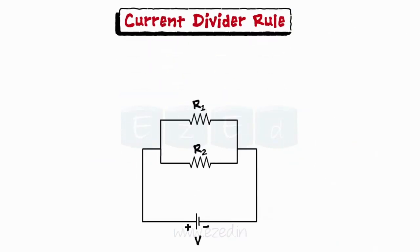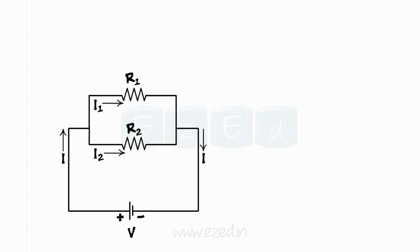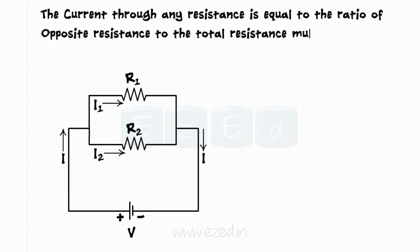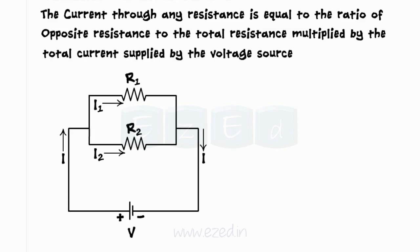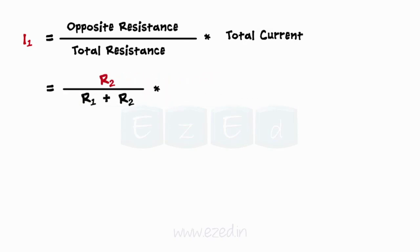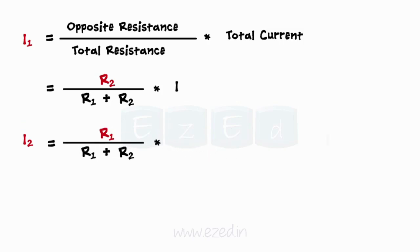Similar to the voltage divider for series circuits, we use the current divider rule to find the current through a particular branch of a parallel network. It states that the current through any resistance equals the ratio of the opposite resistance to the total resistance, multiplied by the total current. Thus, IR1 = R2/(R1+R2) × I, and IR2 = R1/(R1+R2) × I.